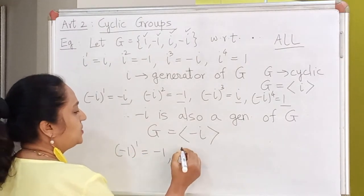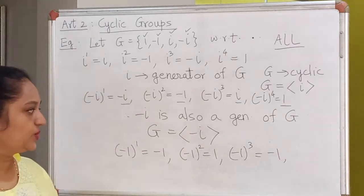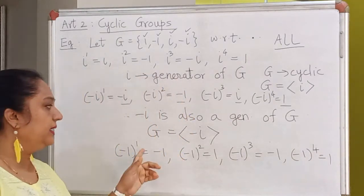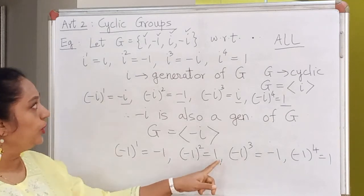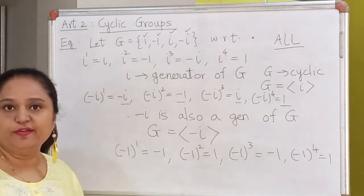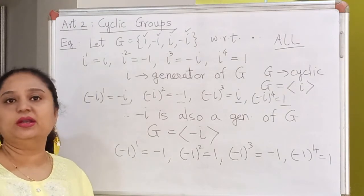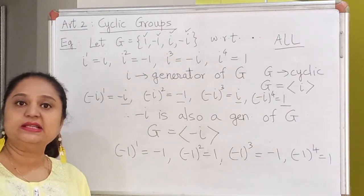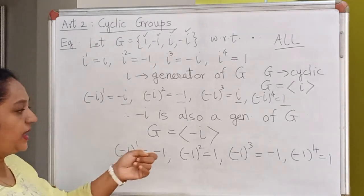How about -1? Let's check. (-1)^1 = -1, (-1)^2 = +1, and we will keep getting -1 and +1 only. So the element -1 has the power to generate only 2 elements: 1 and -1. We will not get the elements i and -i by taking powers of -1. In that sense, -1 is not a generator because it does not have 100% power — it can generate only 2 elements of the group, whereas a generator must generate all elements.